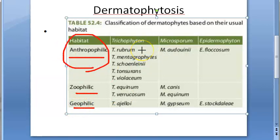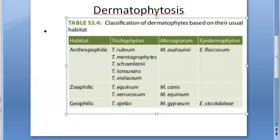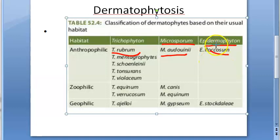Among the anthropophilic species, important names to know are: Trichophyton rubrum, Microsporum audouinii, and Epidermophyton floccosum. At least these three names you should be able to remember.